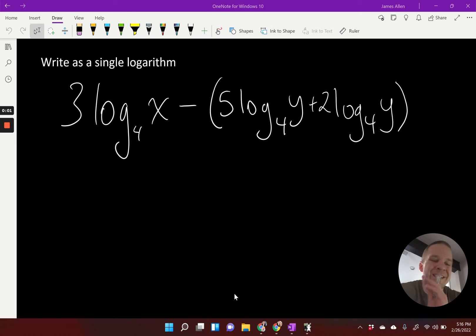Oh man, we got ourselves some more condensing happening here. We're going to write this one as a single logarithm, and it is a little bit different than some of the other ones we've done because we have two terms within a set of parentheses with subtraction out in front. How's that going to play a role?